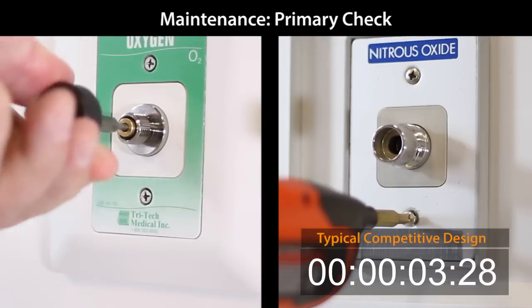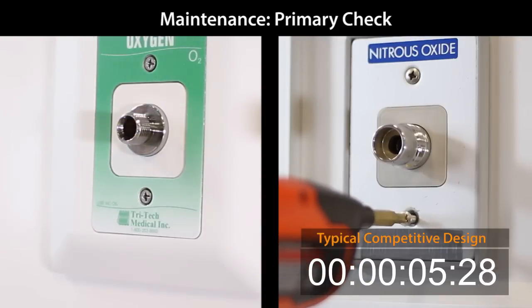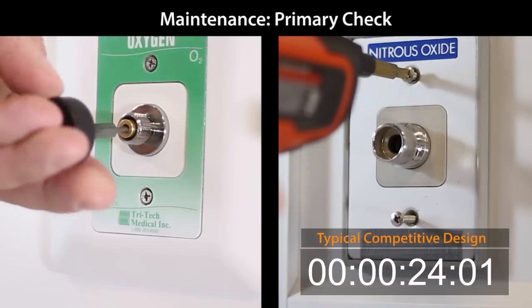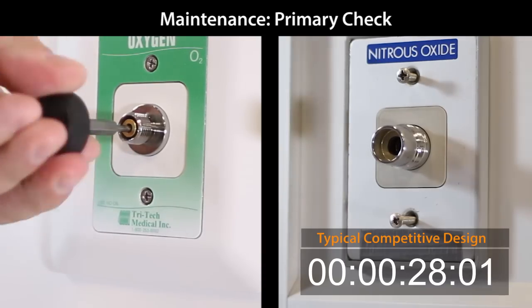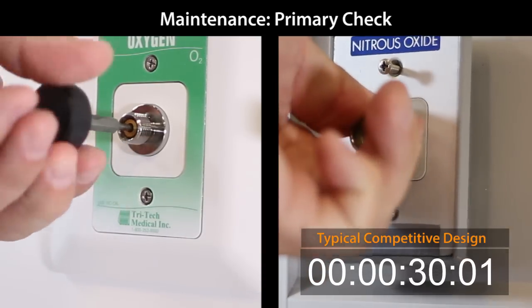Maintenance primary check. With the Tritec DISS outlet, maintenance of the primary or front check valve has been minimized. The primary check is simply unthreaded from the outlet and replaced without removing the latch valve assembly.